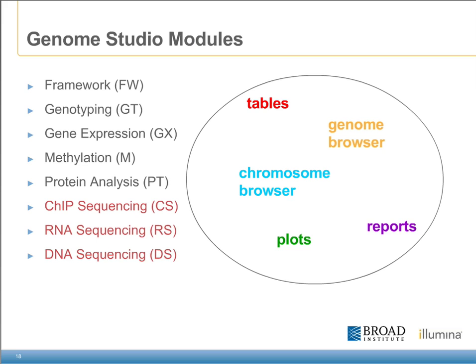Genome Studio is broken down into a number of different modules, which can be purchased or used separately. On the array-based side, there's genotyping, gene expression, methylation, as well as protein analysis. On the sequencing side, there are three modules, which include DNA, RNA, and ChIP sequencing. For each of these modules, there are separate visualization, as well as filtering, reporting, and output tools which help to organize the data.